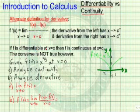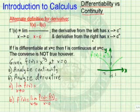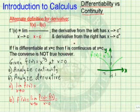If f is differentiable at x equals c, then f is automatically continuous at x equals c. However, the converse is not true — if we know a function is continuous, we do not necessarily know that it is, in fact, differentiable.